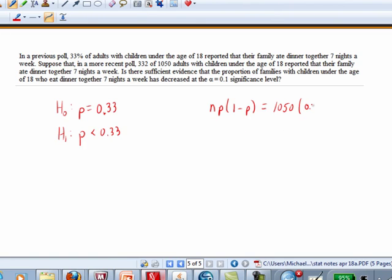And what do we get for that? 232.155, about 232, which is certainly at least 10. And so, the normality requirement is satisfied.